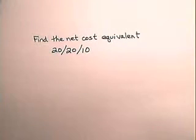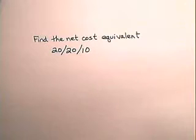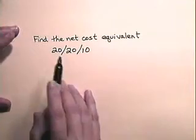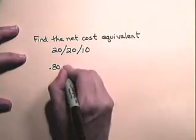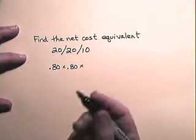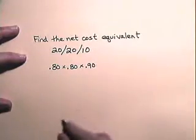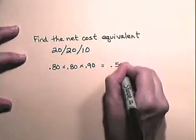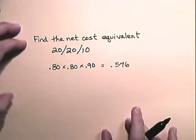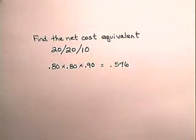Now let's use complements to find the series discounts and to get the net cost equivalent. Let's find the net cost equivalent for terms 20, 20, 10. The complement is the number that must be added to a given discount to get one — it's the portion that is paid. So if this is a 20% discount, then the complement would be 80%. A 20% complement would be 80%, and a 10% complement would be 90%. We multiply these complements together to find the portion that is actually paid: 80% times 80% times 90% equals 57.6%, which is the net cost equivalent.